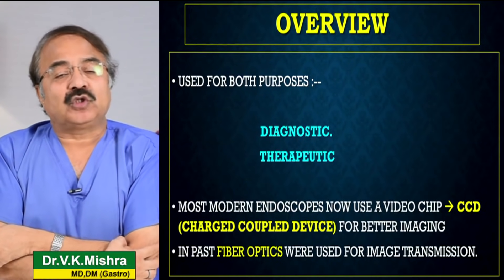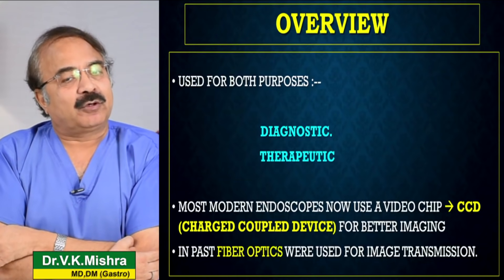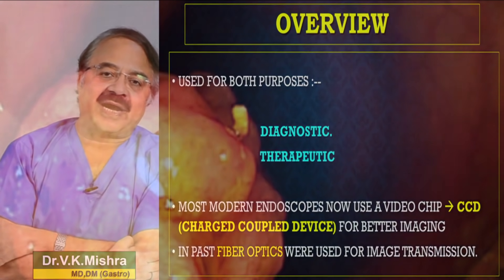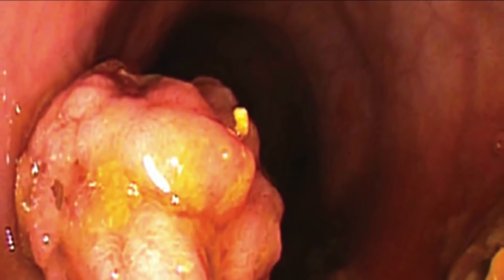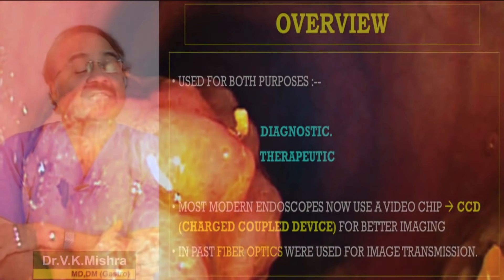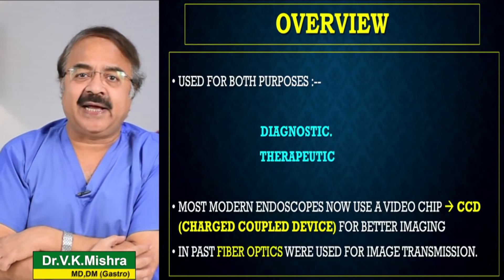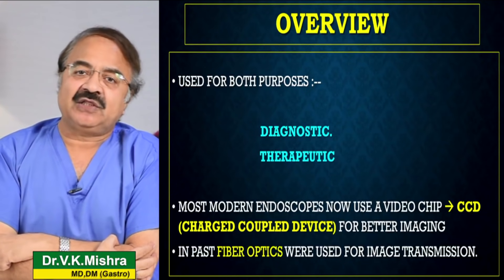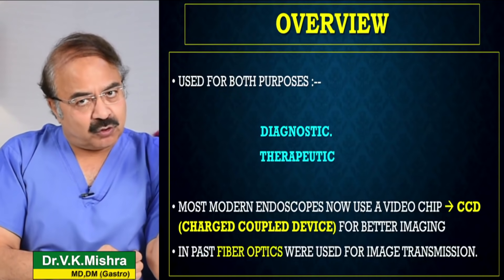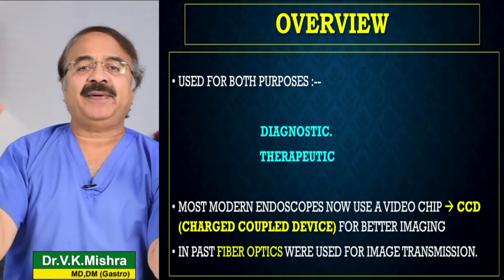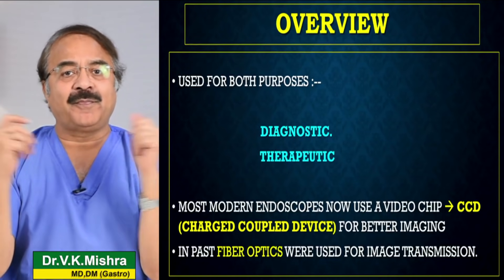Number two, यह कभी आपको therapeutic purpose के लिए की जाती है। Say for example कि आपको खाने की नली में कोई रुकावट है। तो यह therapeutic endoscopy है। एक diagnostic endoscopy होगी जो बीमारियों को पहचानने के लिए है, एक therapeutic endoscopy होगी जो बीमारियों को treat करने के लिए है। तो यह दोनों आयाम हैं वास्तव में endoscopy के।